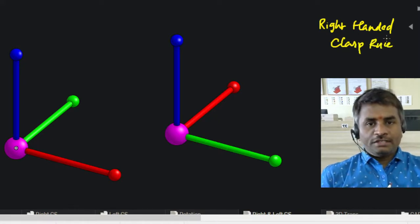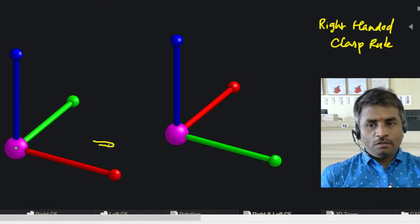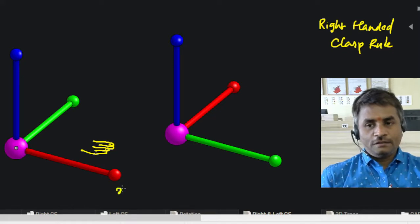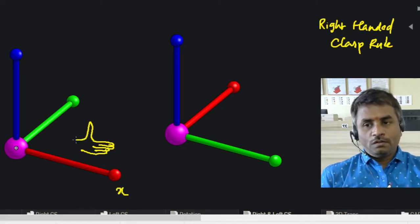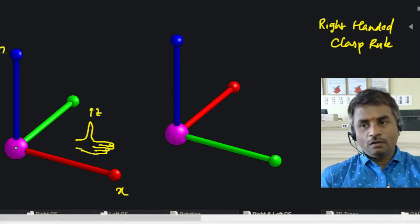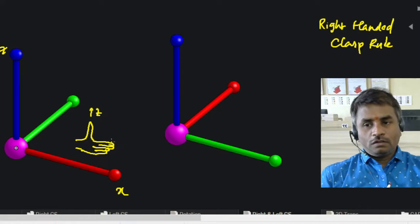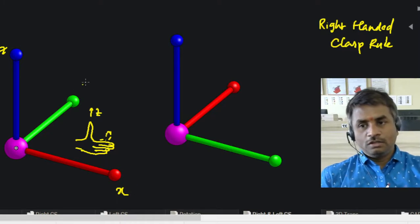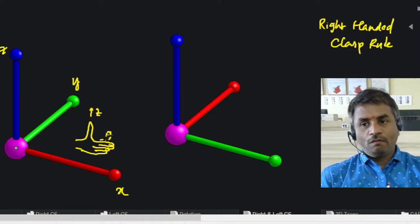This rule states that if your fingers are pointing in one direction—in this case the direction of the x-axis—and your thumb is in the direction of another axis, that is z in this particular case, then the direction of folding of your fingers will give us the third direction, in this case the y-axis.